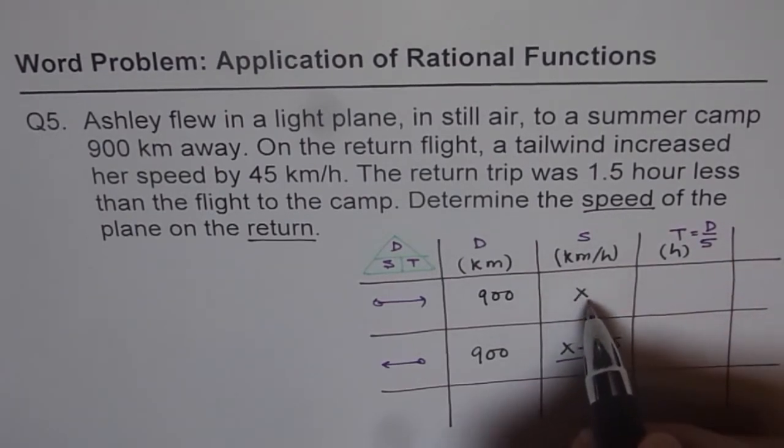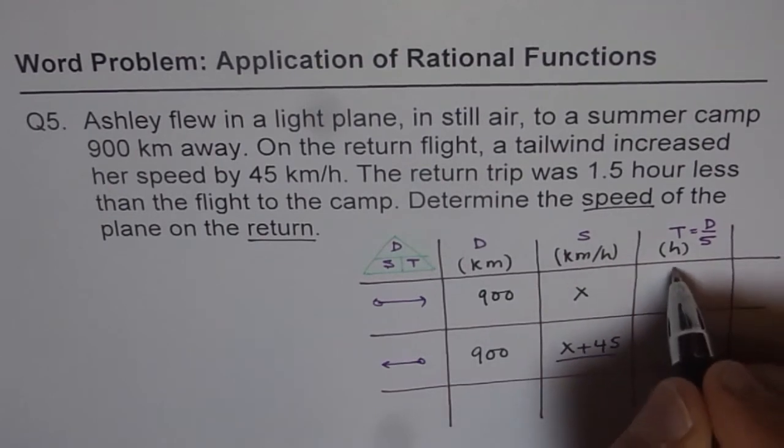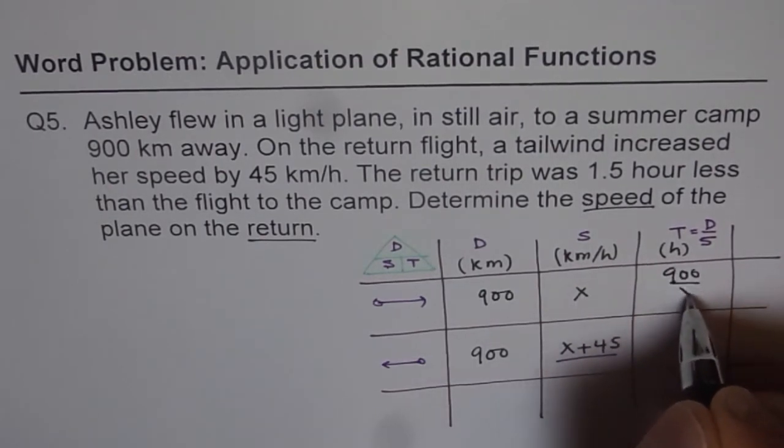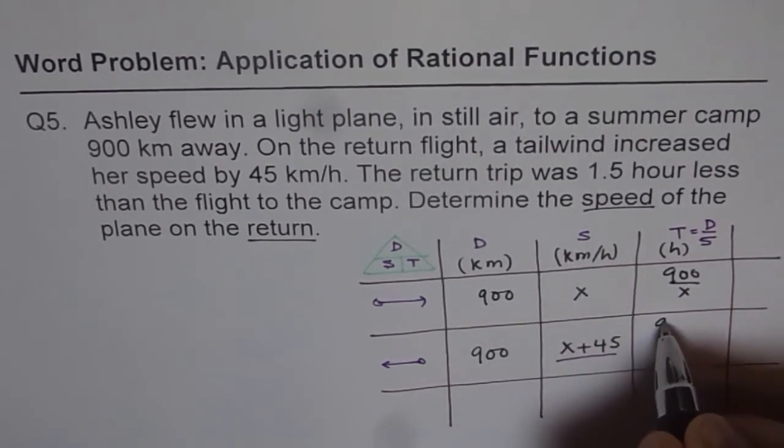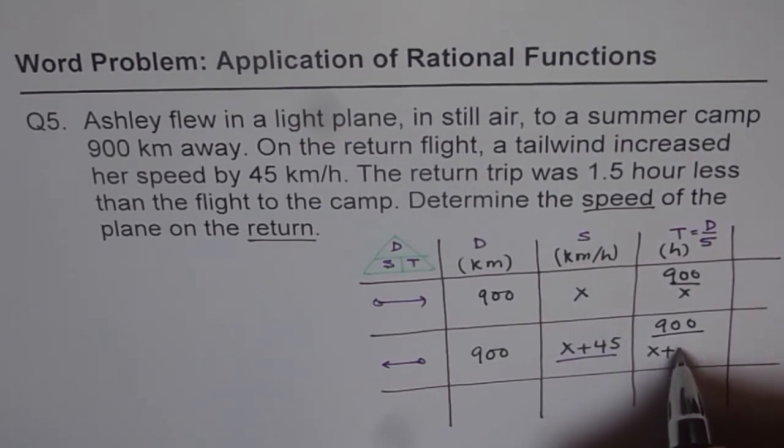So in this case, time should be 900 over x, and here it is 900 over x plus 45.